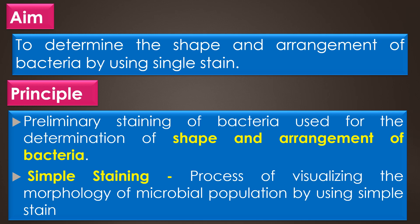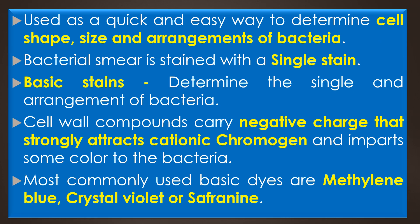The principle: simple staining is the process of preliminary staining of bacteria used for the determination of shape and arrangement of bacteria. The process of visualizing the morphology of a microbial population by using a simple stain is called simple staining. It can be used as a quick and easy way to determine the cell shape, cell size, and cell arrangement of bacteria.